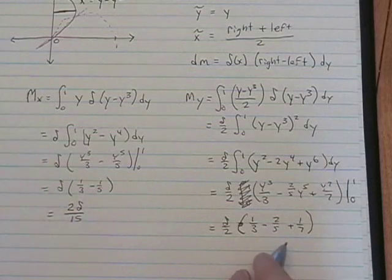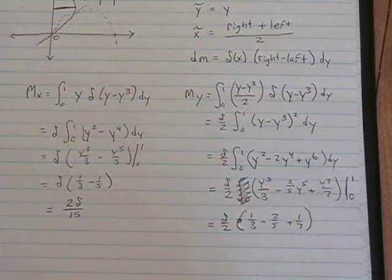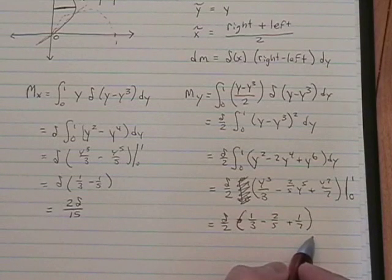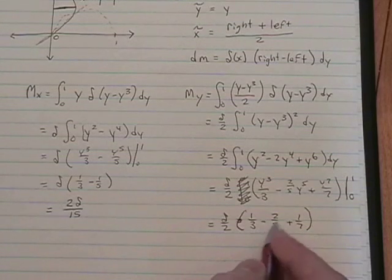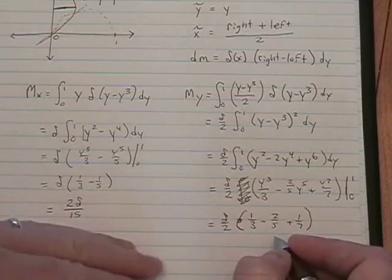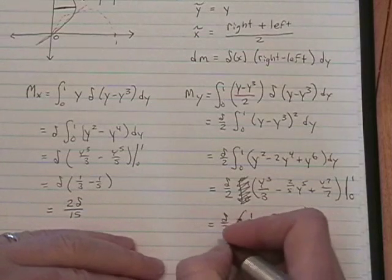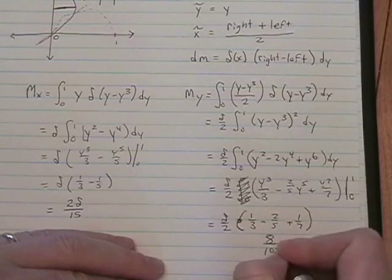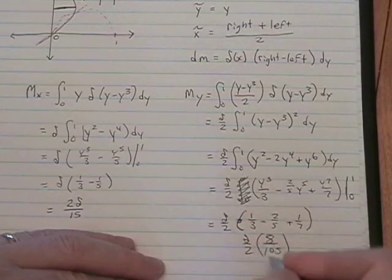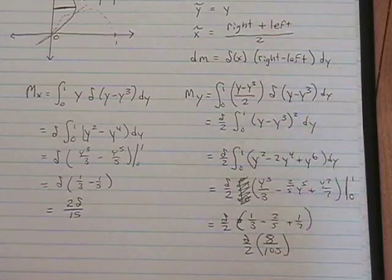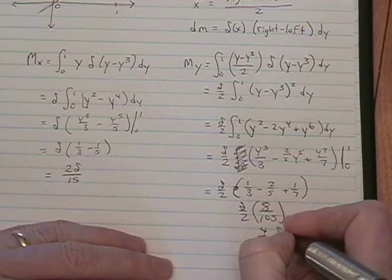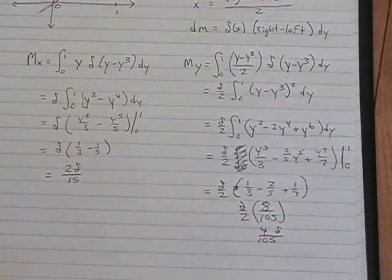Common denominator here happens to be 105. And when you do that math, you get 35 minus 42 plus 15 over 105, which happens to be 8 over 105, times delta over 2. And so we are looking at 4 delta over 105.